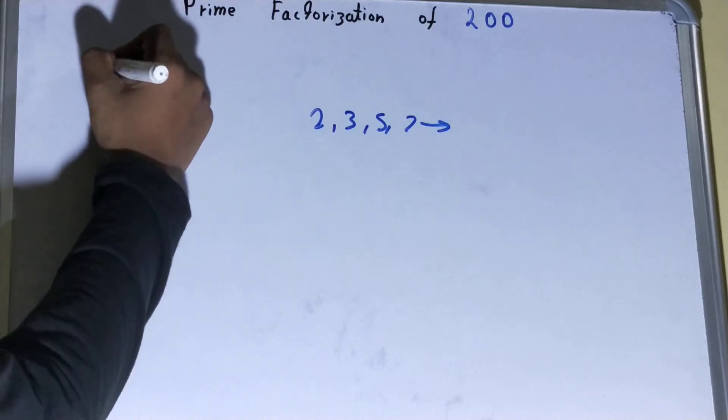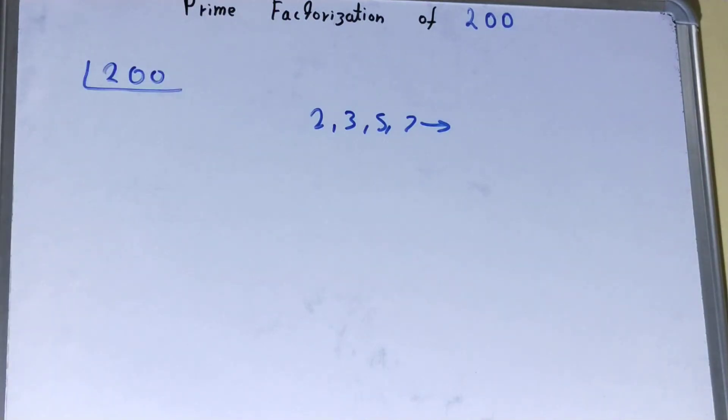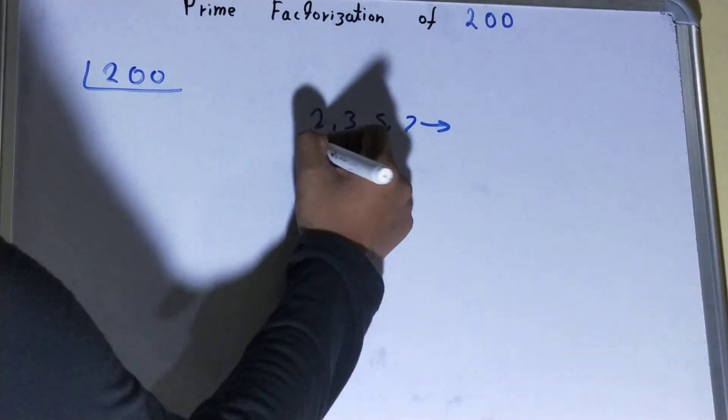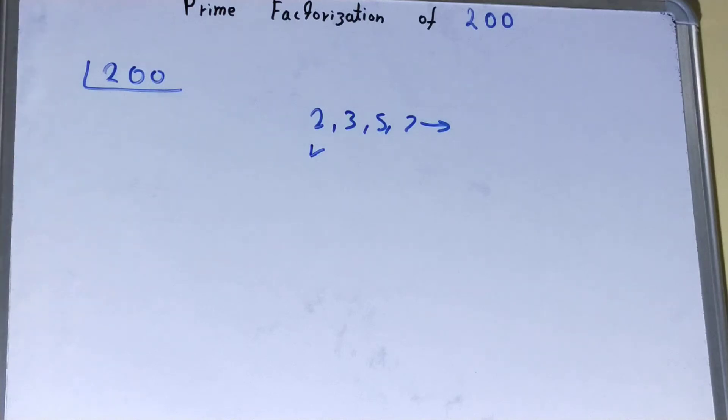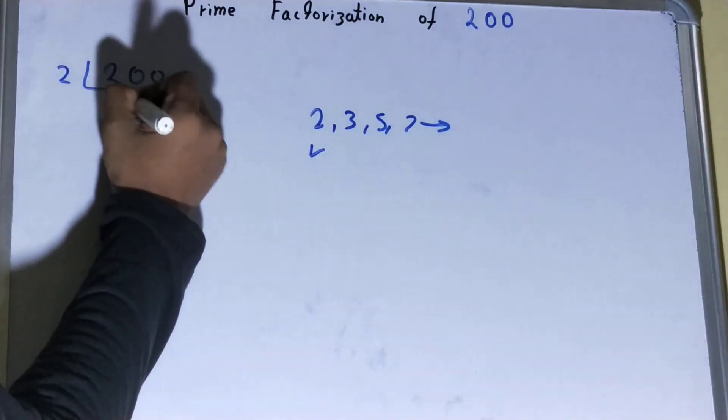So let's quickly prime factorize this 200. What we actually do in the case of prime factorization is we start from the lowest prime number, which we know is 2. Is this 200 divisible by 2? It is divisible, so we'll divide it and we'll be left with 100.